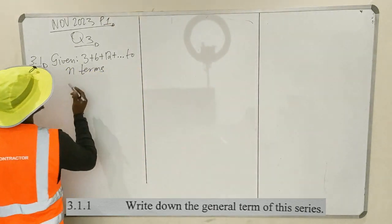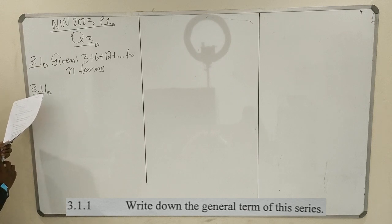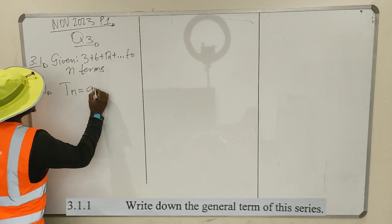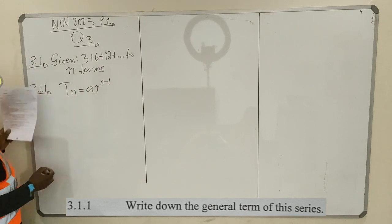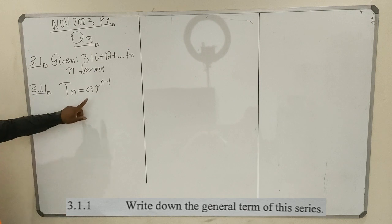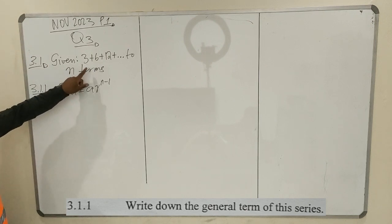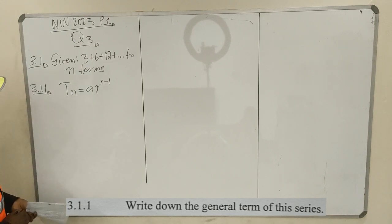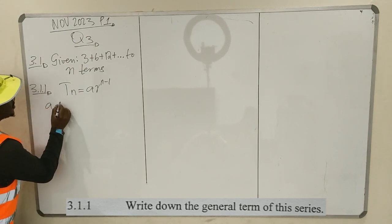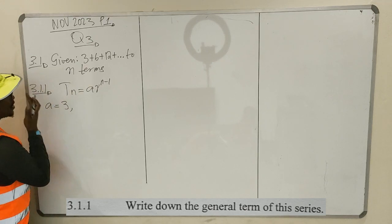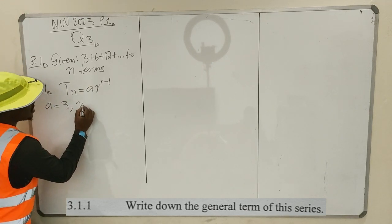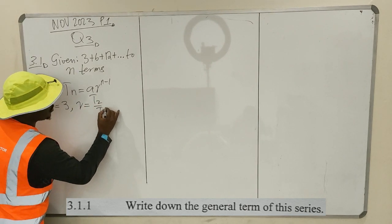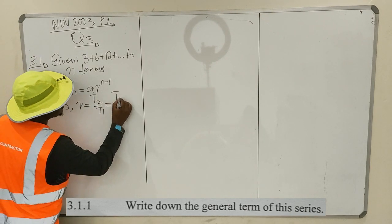We are told that this is the geometric series. The general term will be in the form Tm = A · R^(n-1). This is the general term, where A is the first term and R is the common ratio between two consecutive terms. So your A is equal to 3. Your R is the common ratio between any two consecutive terms, say T2 over T1, or T3 over T2. This is how we find R.